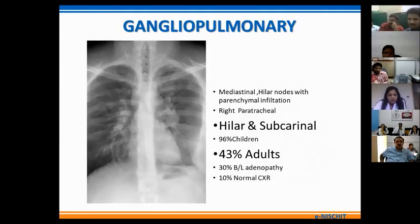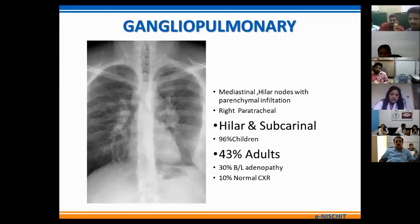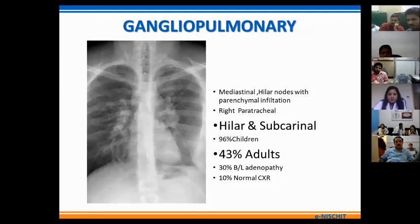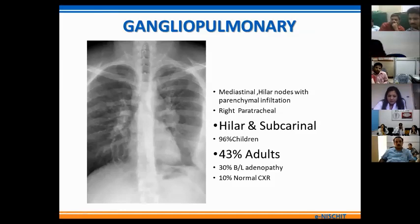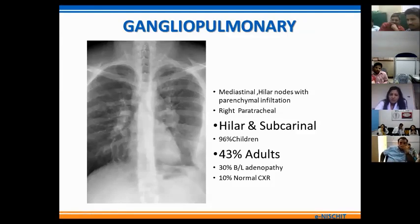The gangliopulmonary pattern of primary TB is characterized by the presence of mediastinal and hilar lymph nodes. The prevalence of adenopathy decreases with age — more than 90% of children show hilar enlargement in primary TB, while in adults it is only 40%. The most commonly affected lymph nodes in primary TB are the right paratracheal, the hilar and the subcarinal. In approximately 30% of cases the adenopathy can be bilateral, and in another 10% the chest X-ray may be normal though the patient is infected.